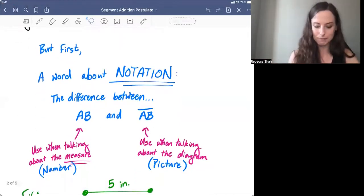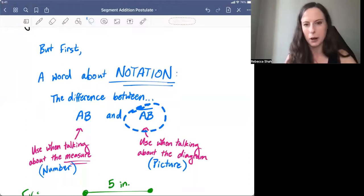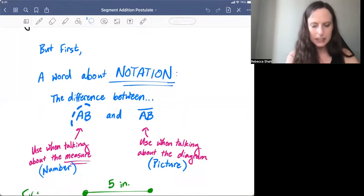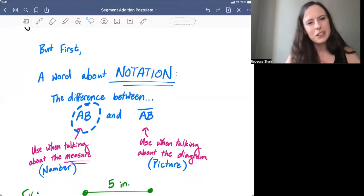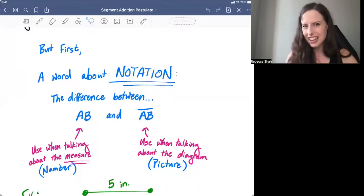Is there a difference between AB and AB with a bar on top? There actually is. When you see AB without the bar, that's when you're talking about the measure of a segment. So your answer is actually like you're describing a number.